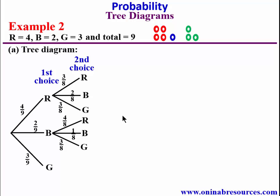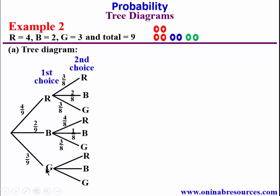Assuming green is picked for the first time, the blue will still remain intact but green will be down by 1. The probability of picking red second is 4/8, blue second is 2/8, and green second is 2/8. That is all we need to do for the tree diagram, since she picks only 2 beads.